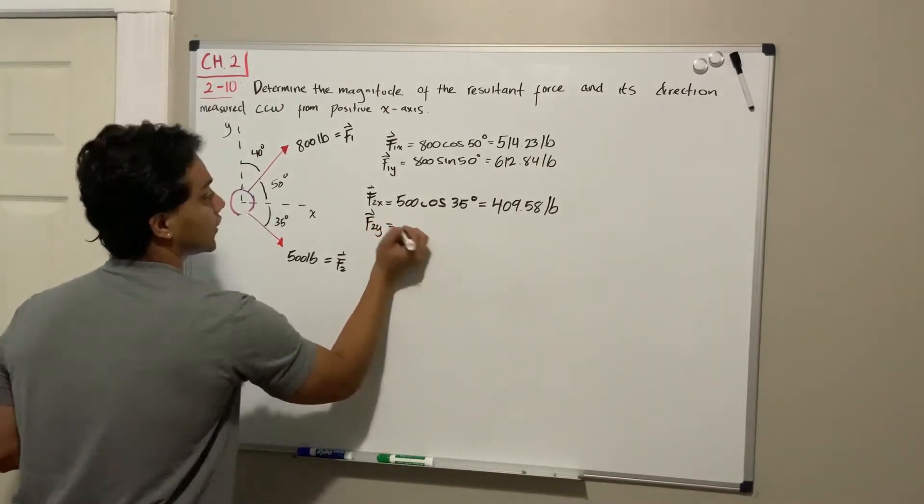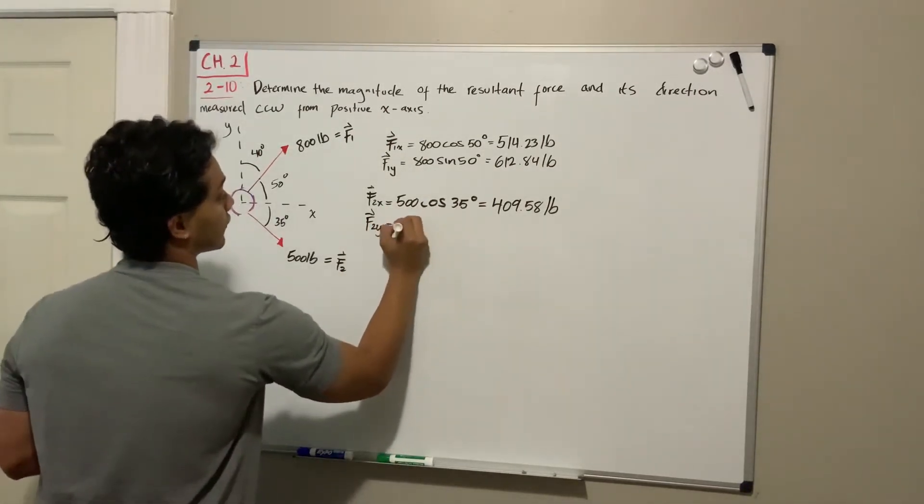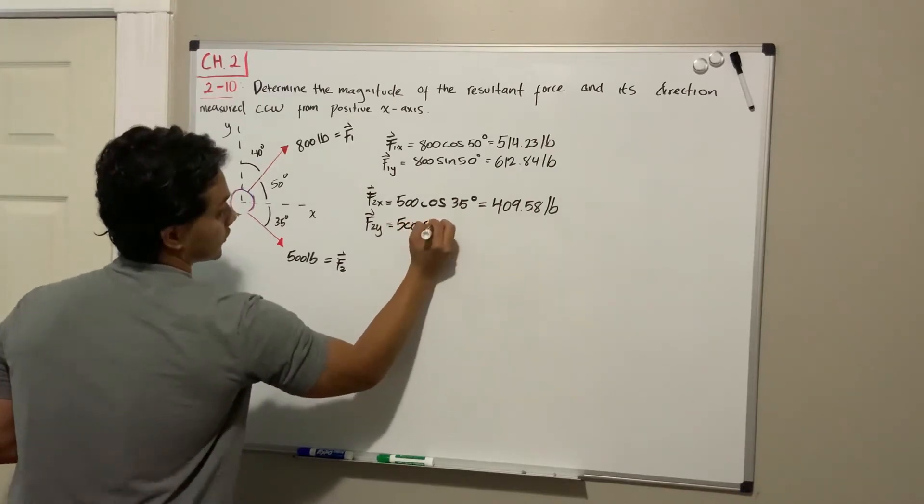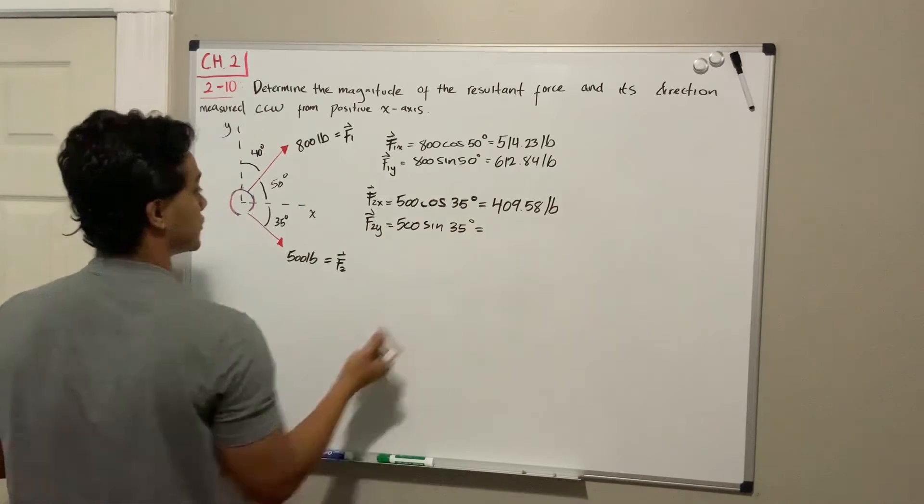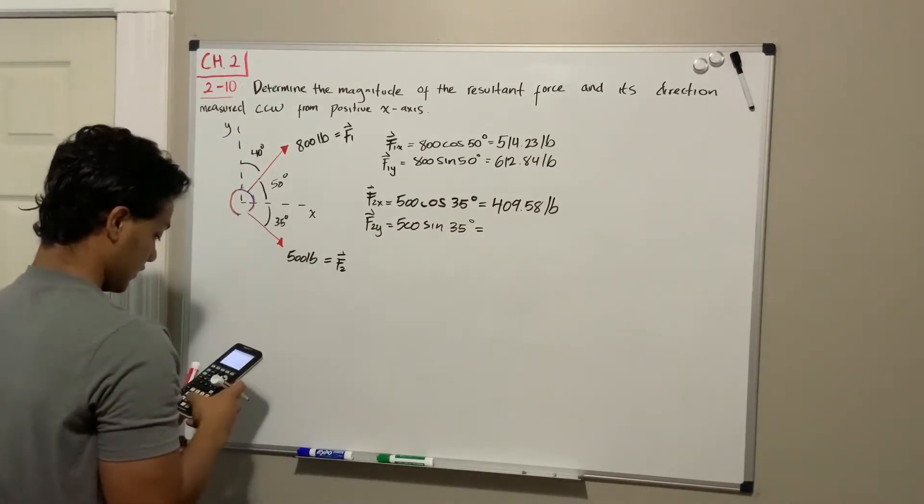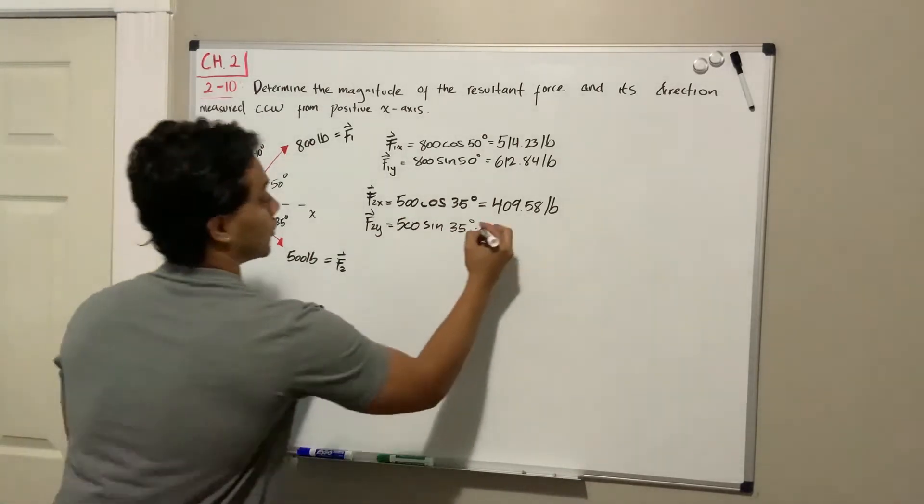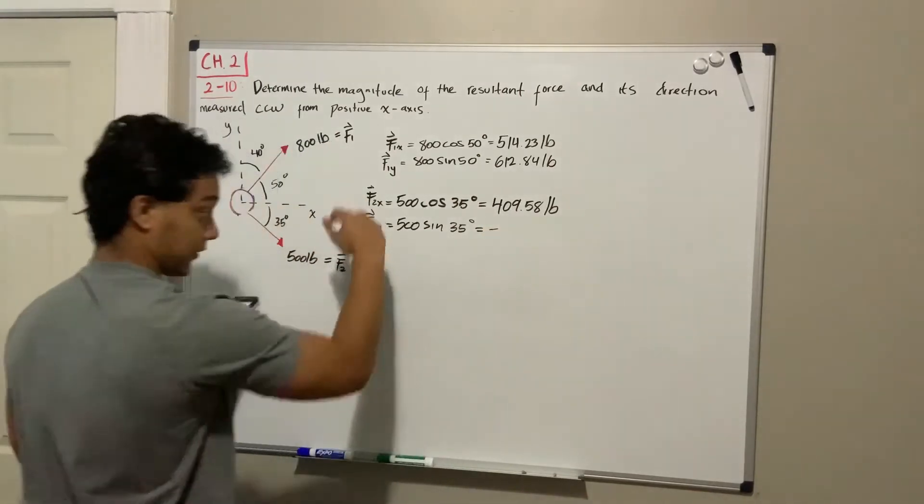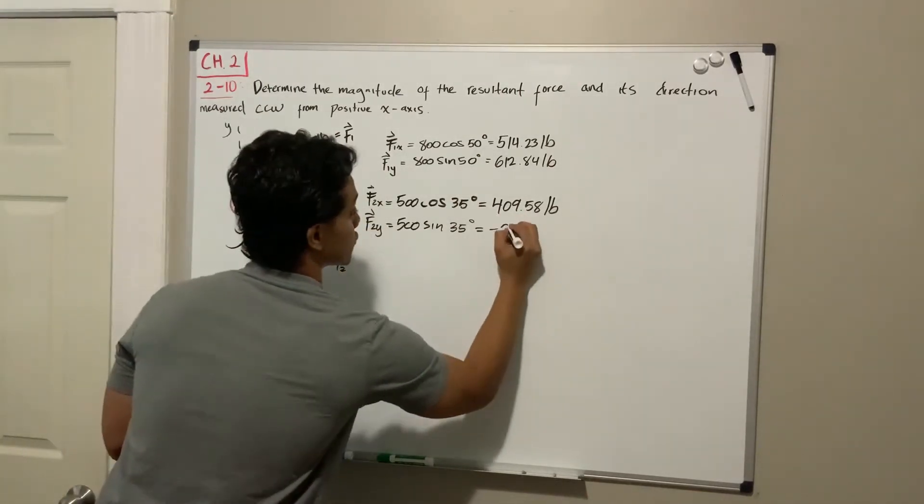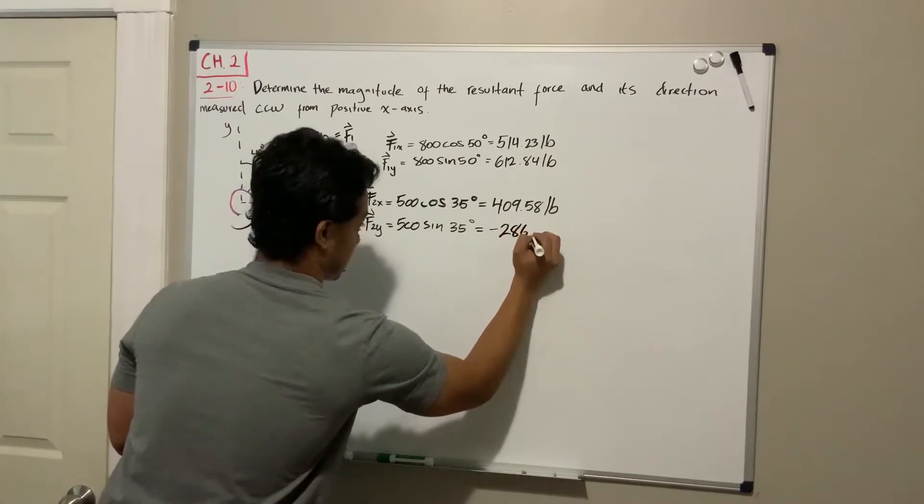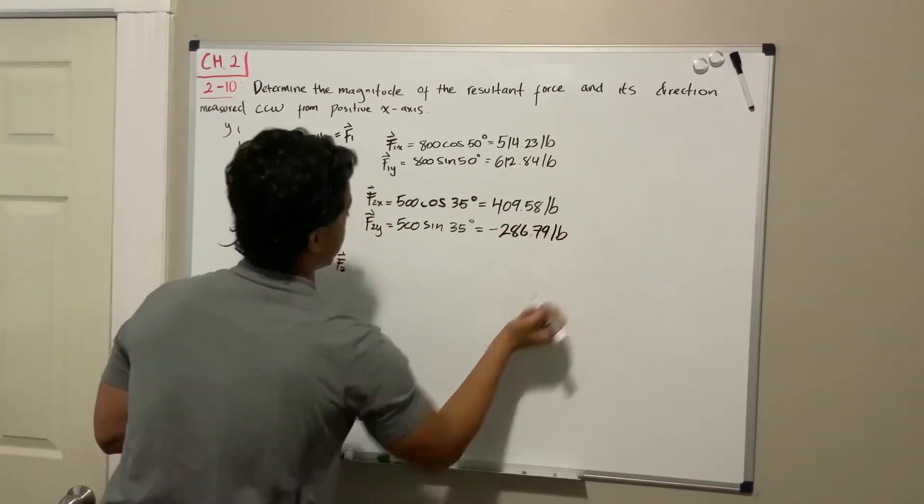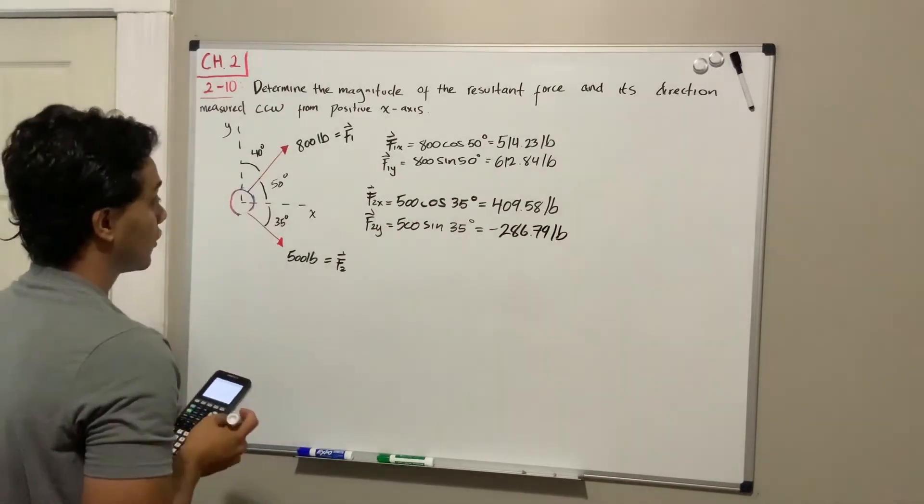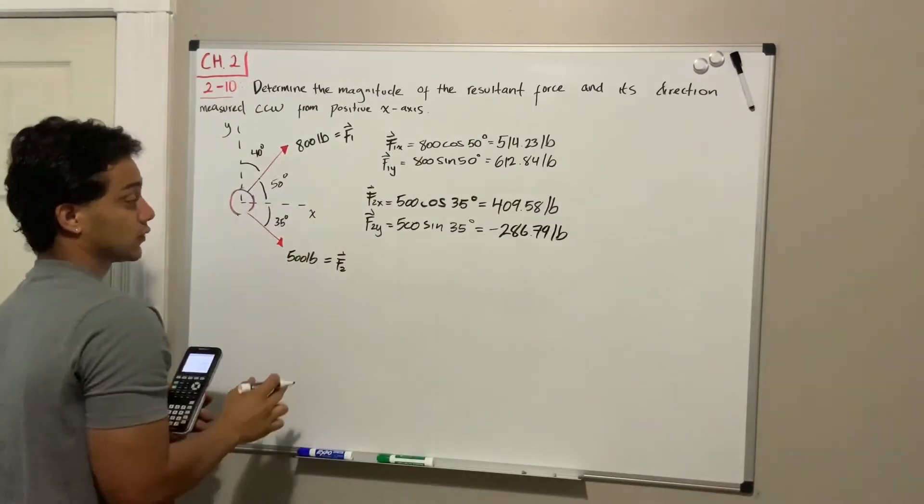For F2 in the y direction, it's going to be 500 multiplied by the sine of 35 degrees, which is actually equal to 500 sine of 35, negative because it's going down, 286.79 pounds.